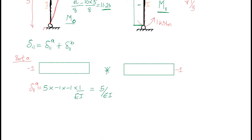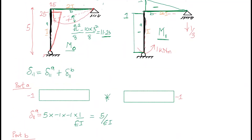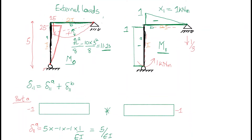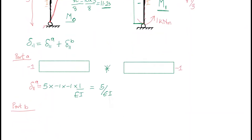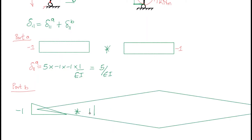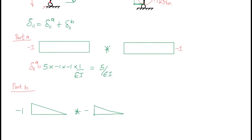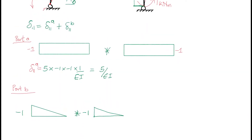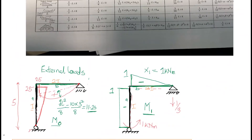For part b, let's see the shapes of the moment diagram. For M we have a triangle, so it's going to be a triangle times a triangle — this times itself. This is negative one, and that is also negative one.